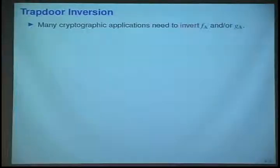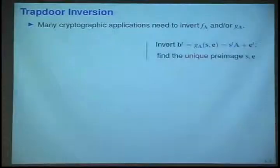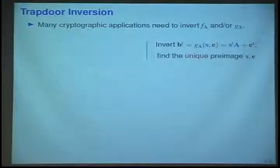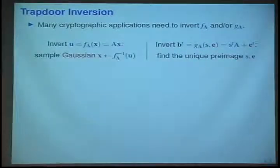If you want to do more applications, then you need to invert these functions. What that means in the injective case is obviously find the unique preimage. In the surjective case, it means that given a uniform output, you actually need to sample from among all the preimages under a Gaussian distribution for mysterious reasons.